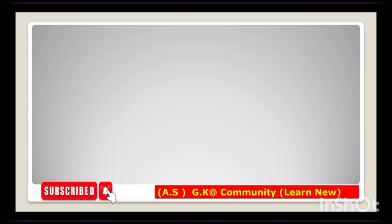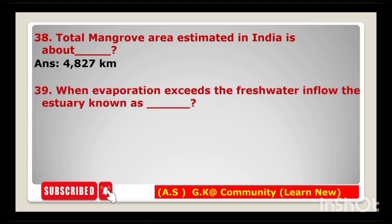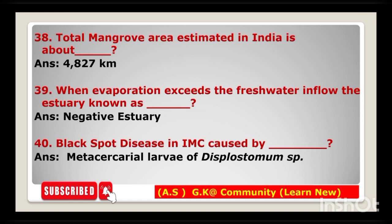Next question: total mangrove area estimated in India is about 4,827 square kilometers. Next question: when evaporation exceeds freshwater inflow, the estuary is known as a negative estuary. Next question: black spot disease in Indian major carps is caused by metacercarial larvae of Diplostomum species.